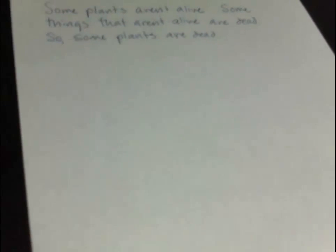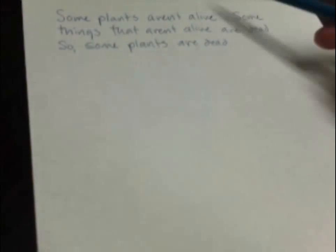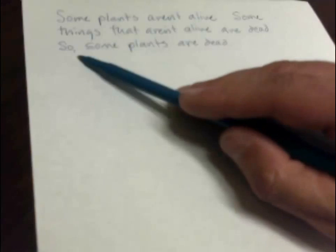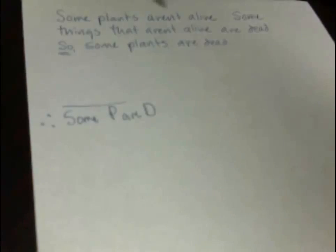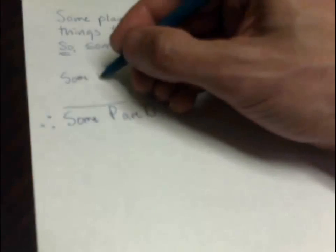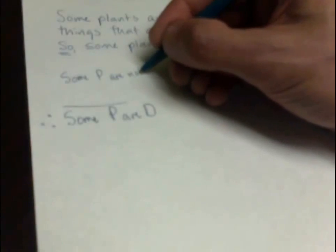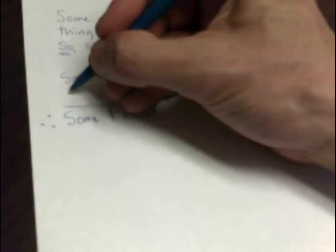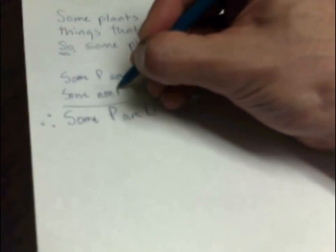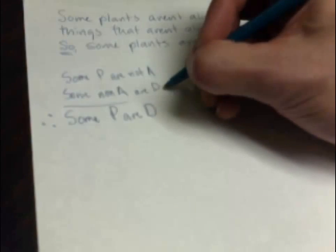Final example: some plants aren't alive. Some things that aren't alive are dead. So, some plants are dead. The conclusion is some P are D, where P is plants and D is dead things. Premise one, some plants aren't alive, is some P are not A, where A is alive things. Premise two, some things that aren't alive are dead, is some non-A are D.